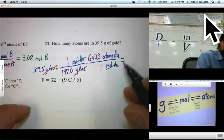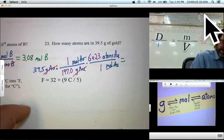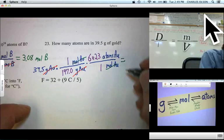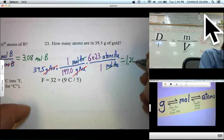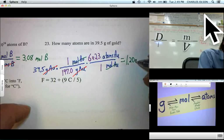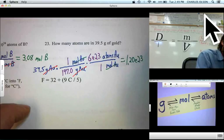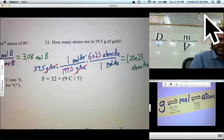That equals, on my calculator, 1.20, 1.20 times 10 to the 23rd. That's a lot of atoms of gold. Atoms of gold. And there we have it.